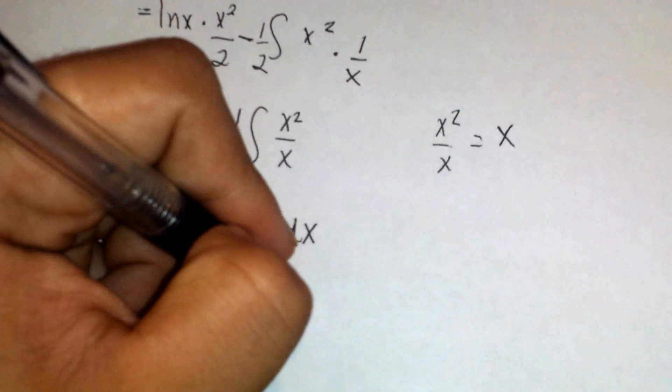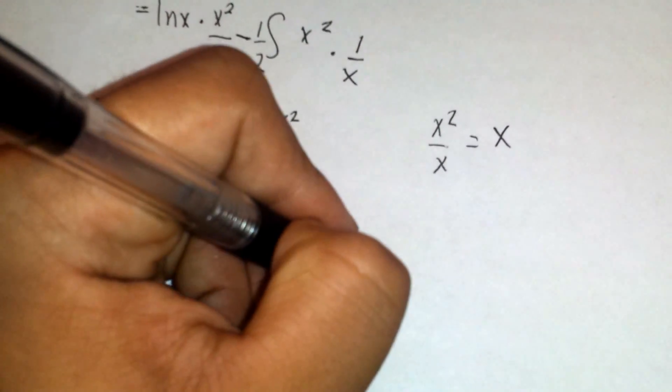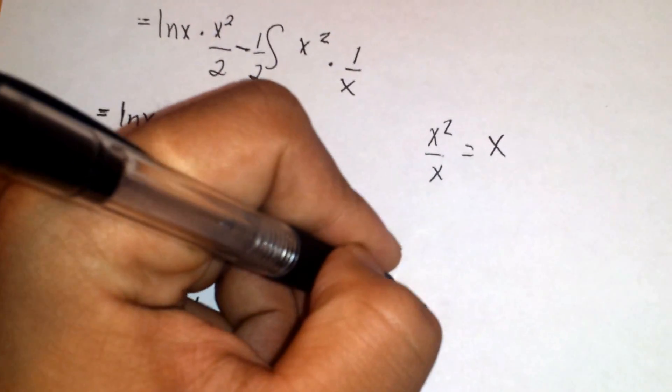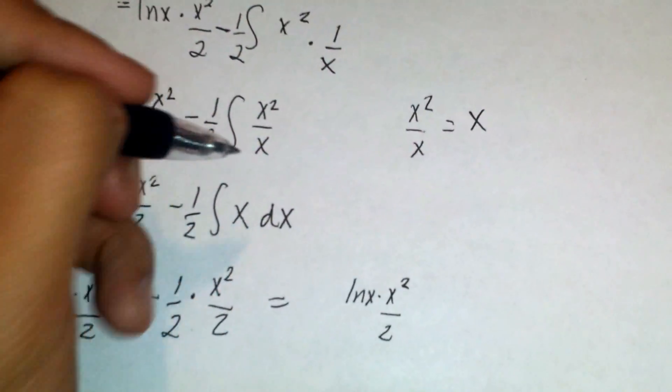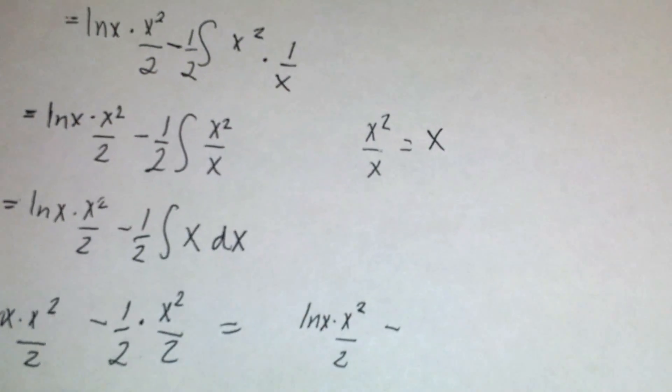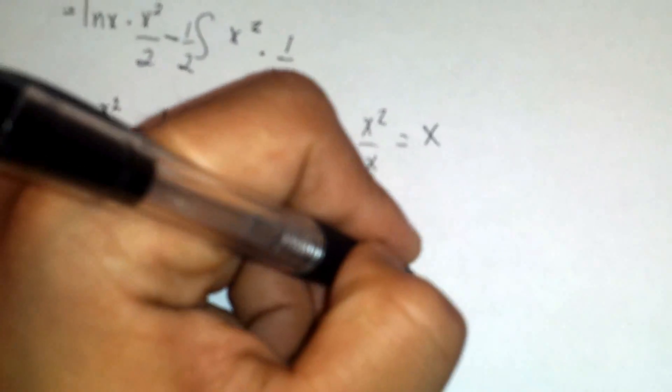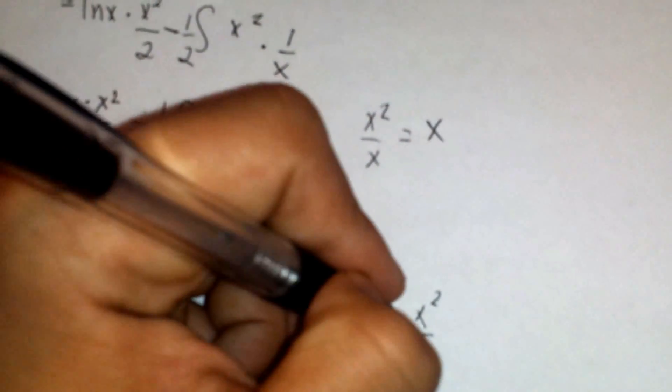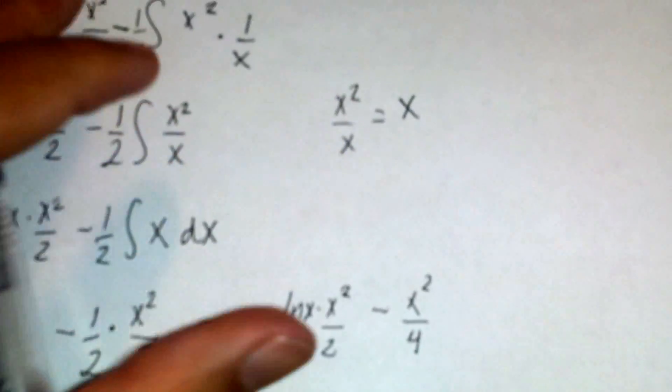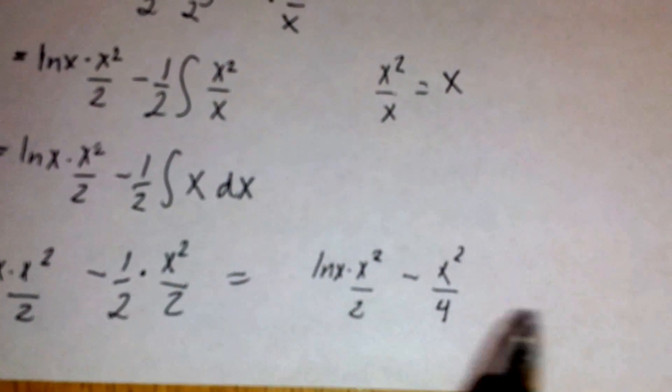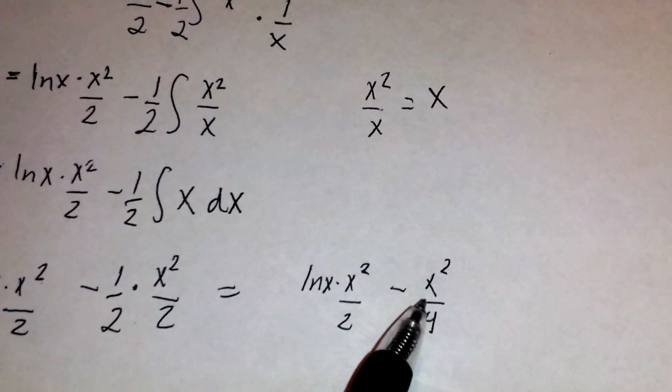Now to simplify all this, we have ln x times x squared over 2 minus x squared over 4. We got the 4 in the denominator because 2 times 2 is 4.